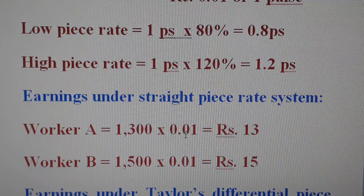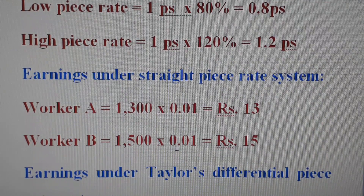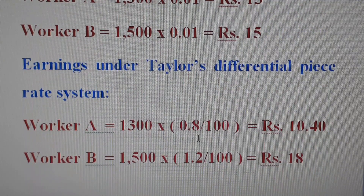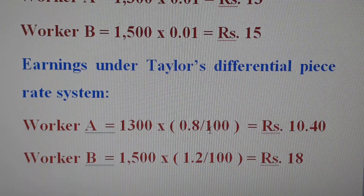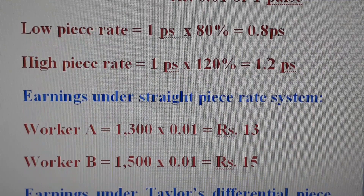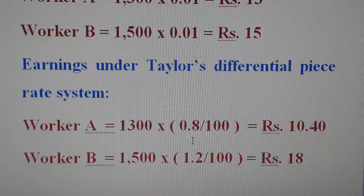Under the straight piece rate system, Worker A's earnings are calculated using the low rate and Worker B's earnings are calculated using the high piece rate. The earnings are derived by multiplying units produced by the applicable piece rate.